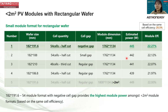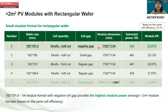This column shows the power output based on the same cell efficiency. By comparison, the first design gives the best power output: 191.6 rectangular, 54 cell half cut, negative gap. Astro Energy's residential product is also based on this design.